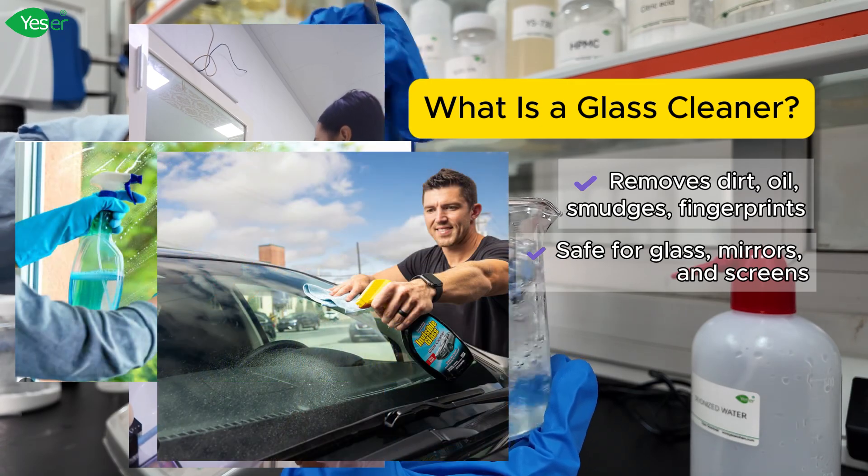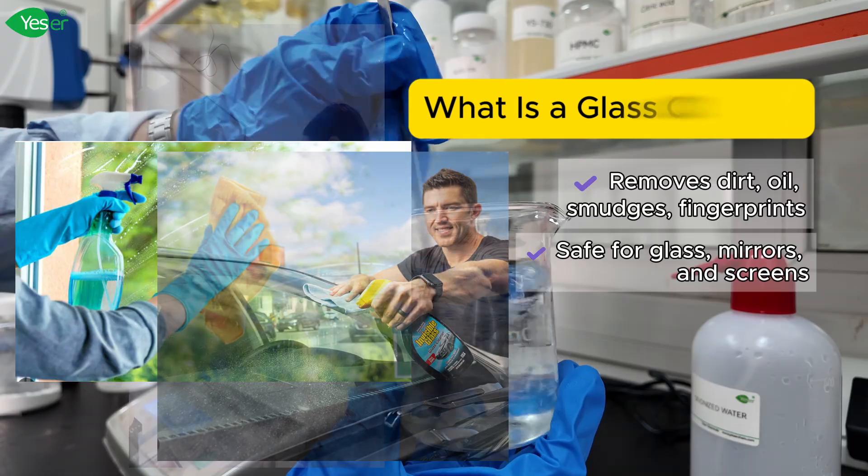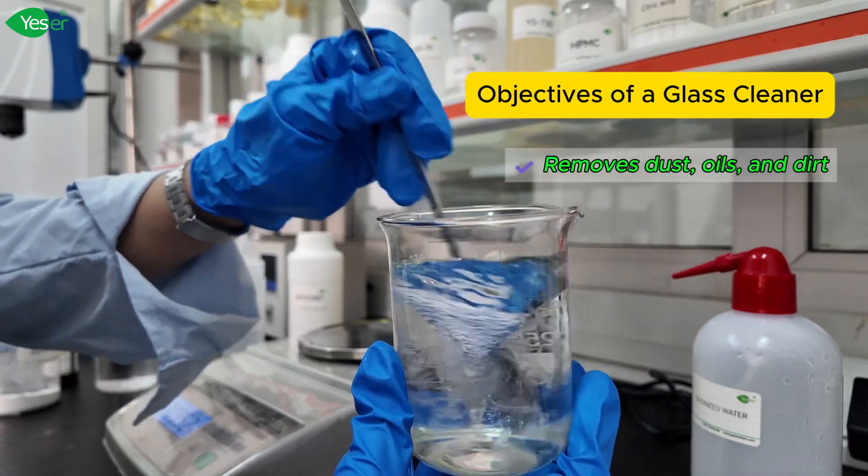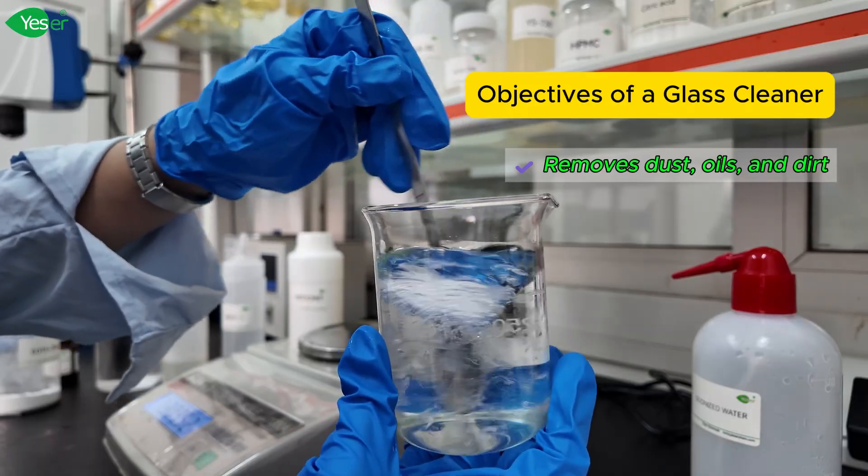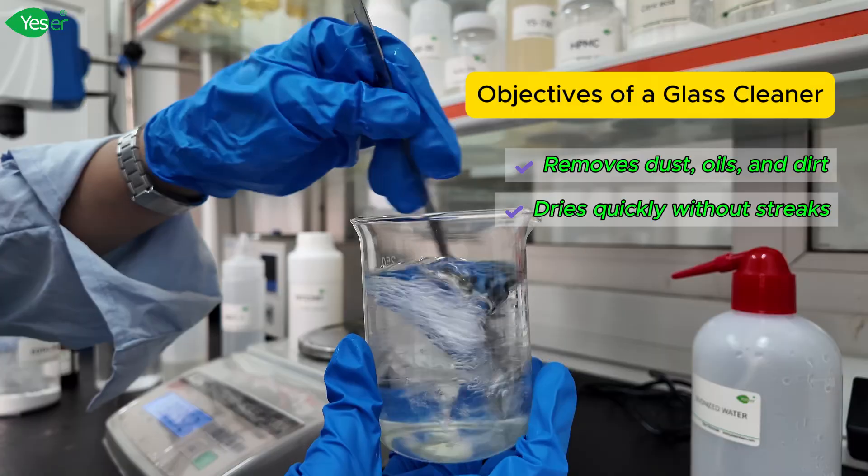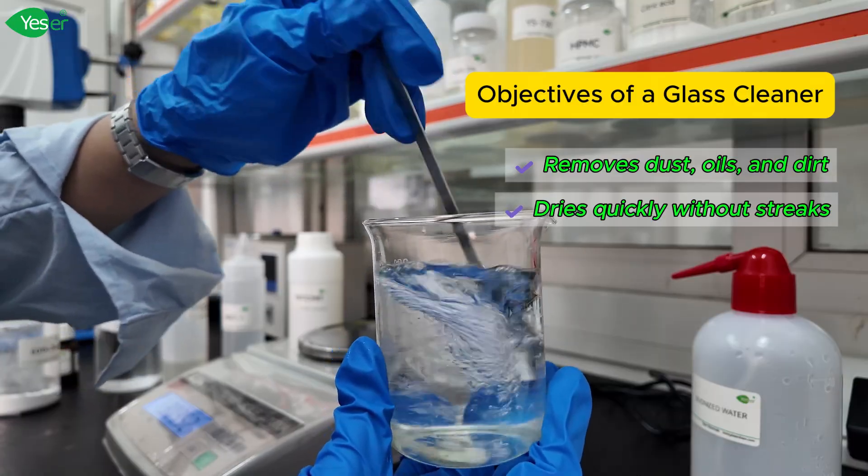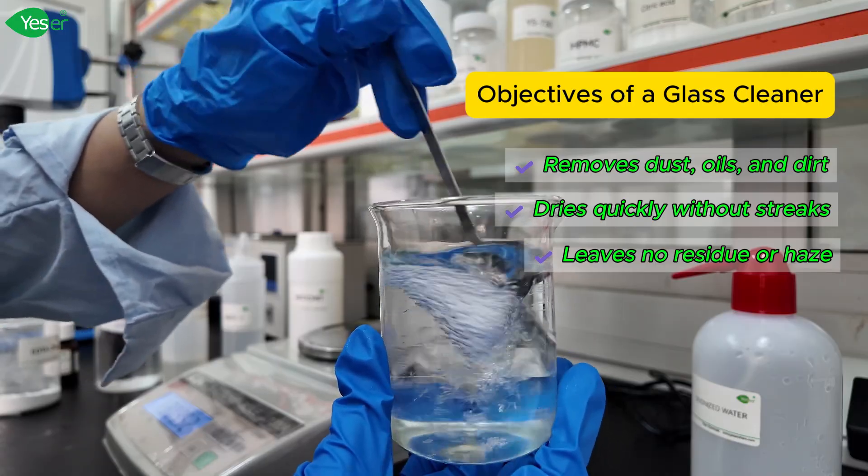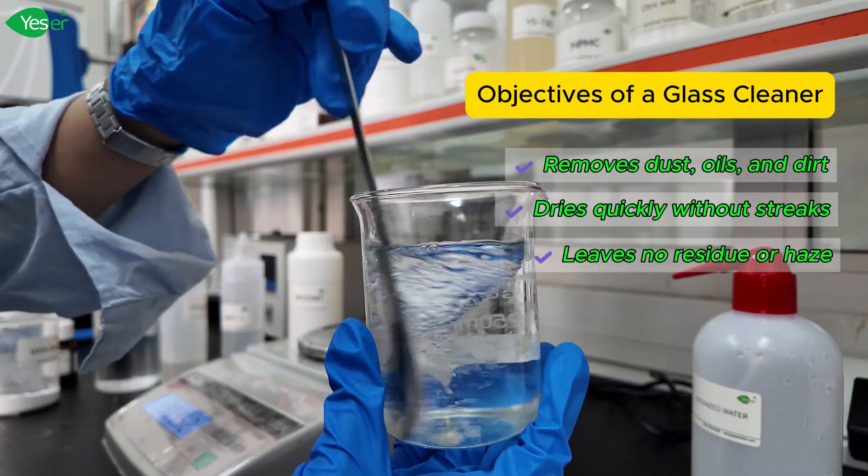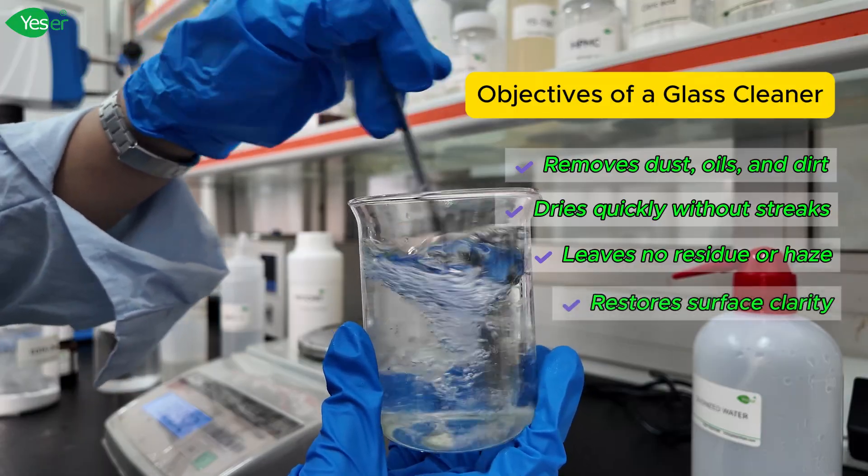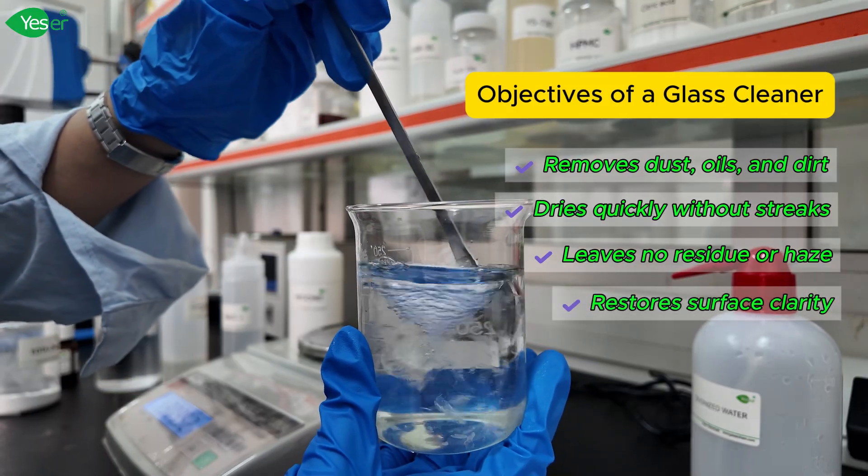The main goals of a glass cleaner are to clean effectively, to remove dust, oils and contaminants. Second is to dry quickly so it needs to evaporate without leaving behind moisture that can cause streaks. Third it needs to leave no residue, you need to ensure a streak free and spotless surface. Next is to enhance surface clarity.